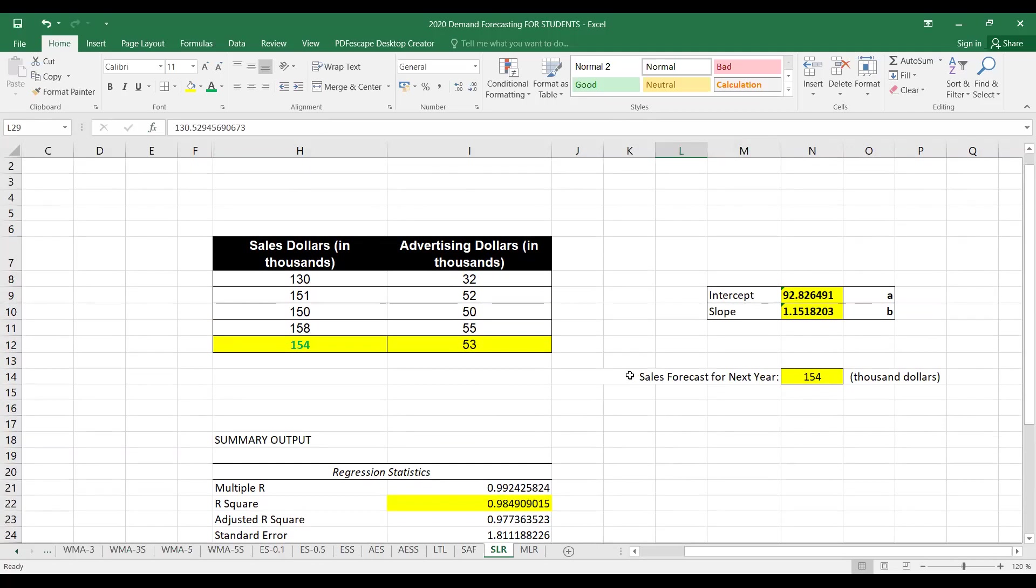This was how we can do simple linear regression to forecast demand for future. This is an example of causal method or associative method. The variable that we were taking was something other than the historical demand data, the amount spent on advertisements. I hope the concept is clear. Thank you.